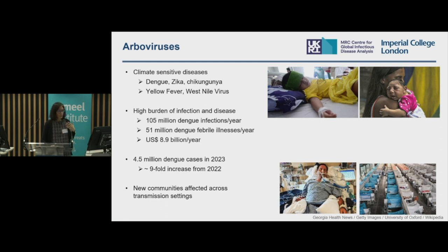These viruses pose a high burden of infection and disease. They cause a high economic burden as well and they can cause severe disease. For instance, dengue is a childhood disease in high transmission settings such as Southeast Asia, and dengue can cause dengue hemorrhagic fever and dengue shock syndrome, that can lead to death.